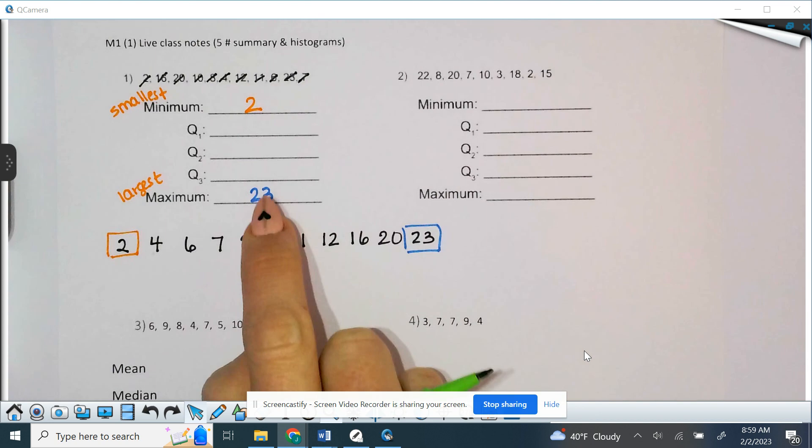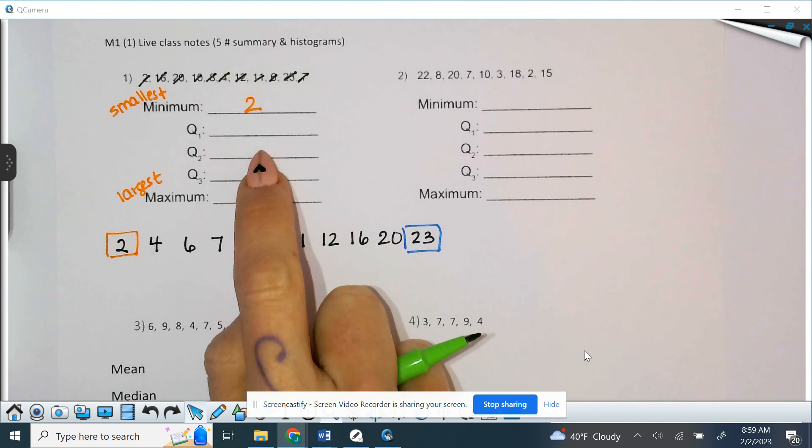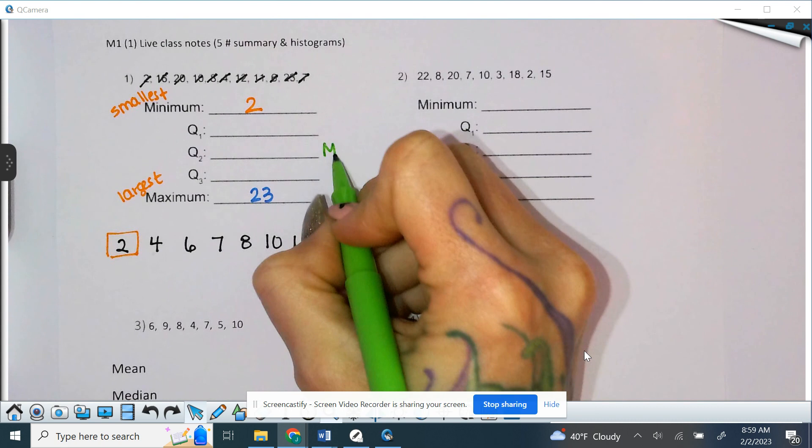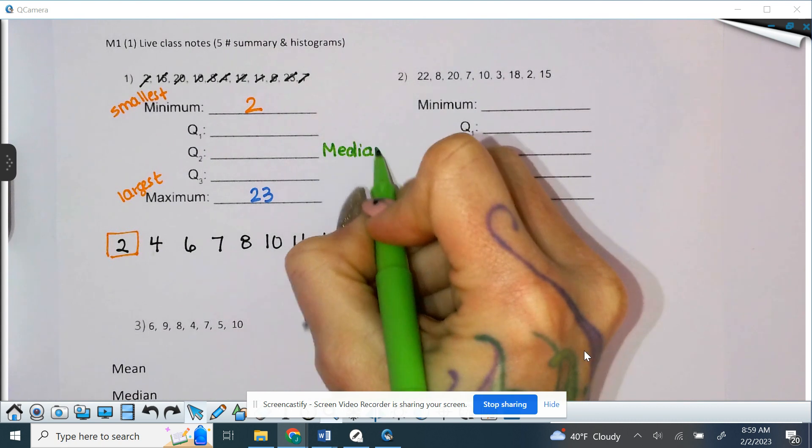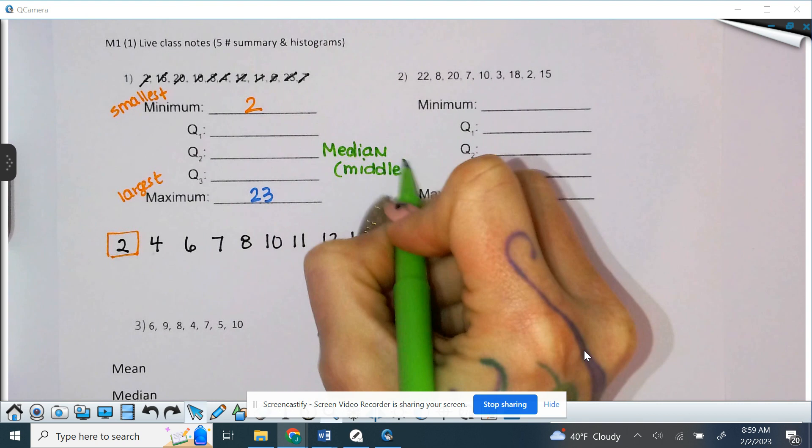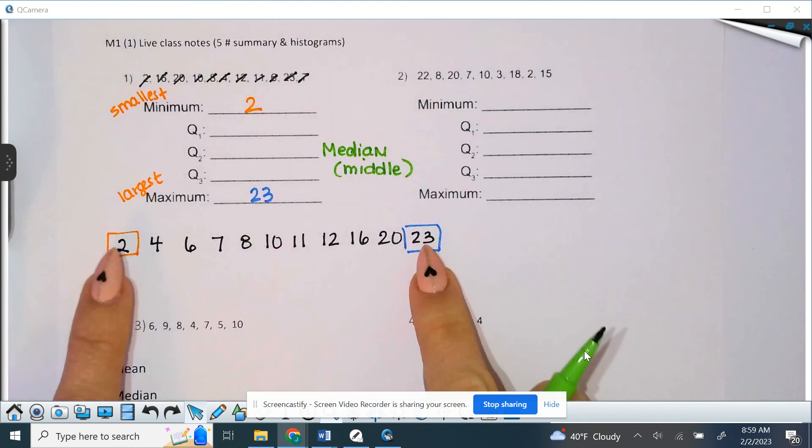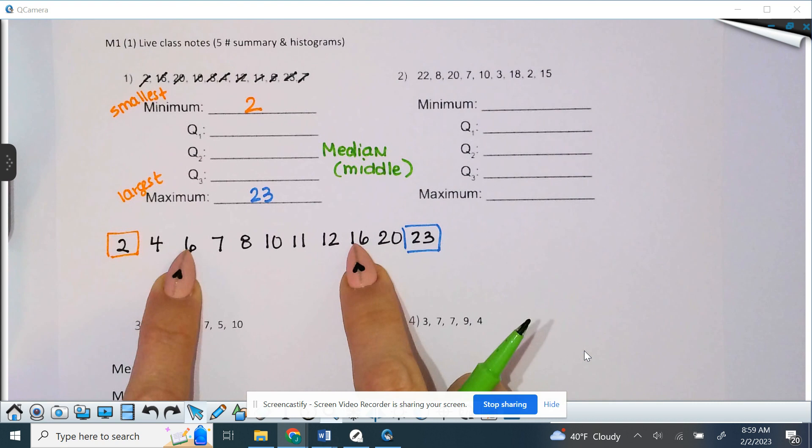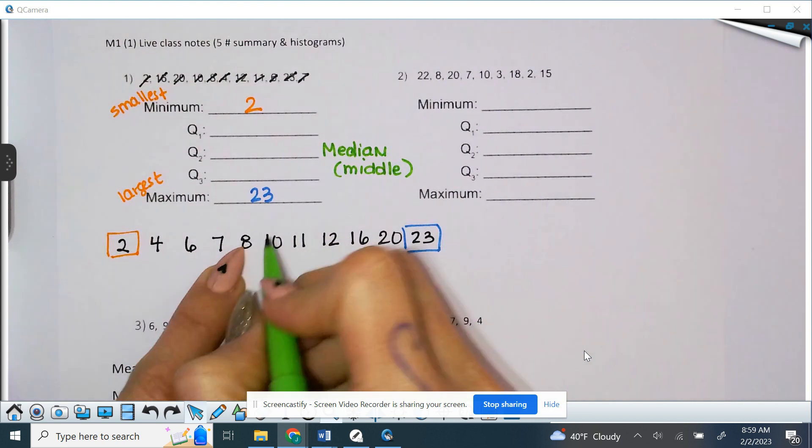Q1, Q3, and Q2. So, Q2, the other word for Q2 is median. And that just means middle. So, the middle of this. So, you're going to count in. So, I have two. I'm going in two by two.